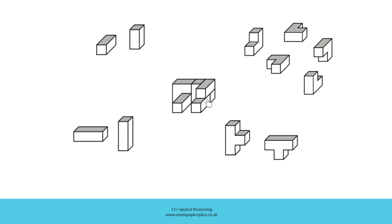This would also be a cuboid in exactly the same position on the other side of the T. Another cuboid would sit like this. Of course, this could also be a longer cuboid directly underneath an L-shaped block like this. There are many different ways that this figure could be composed. These are just some of the examples.